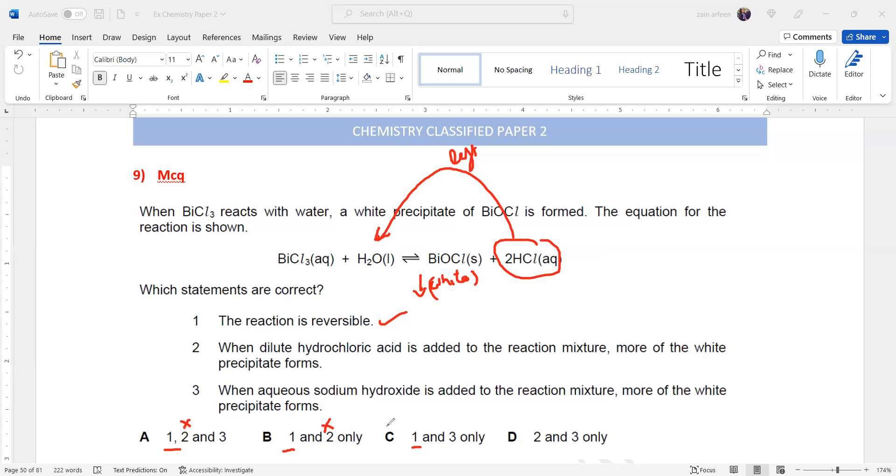We are left with C as a valid answer. Statement three: when aqueous sodium hydroxide is added to the mixture, more white precipitate forms. How? Because when we add sodium hydroxide, it reacts with hydrochloric acid, so the amount of HCl decreases. If the amount of HCl decreases, the equilibrium will shift.